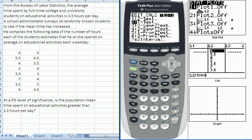So let me go over to that example now. From the Bureau of Labor Statistics, the average time spent by full-time college and university students on educational activities is 3.3 hours per day. A school administrator surveys 16 randomly chosen students to see if that time has increased. He compiles the following data of the number of hours that each student estimates that he or she spends on average on educational activities each weekday, and that data is shown here.